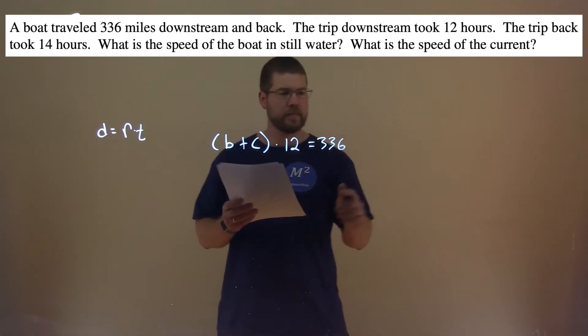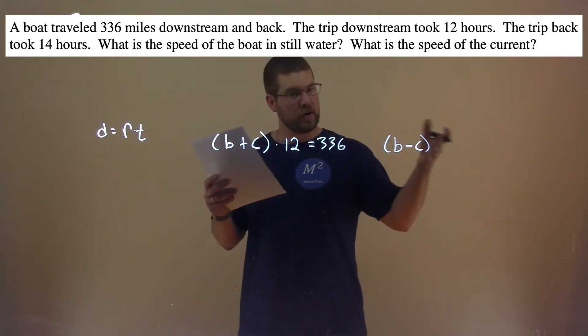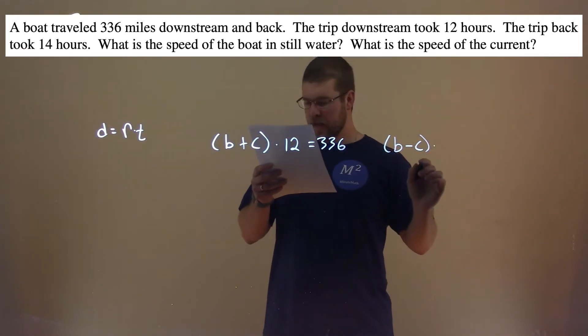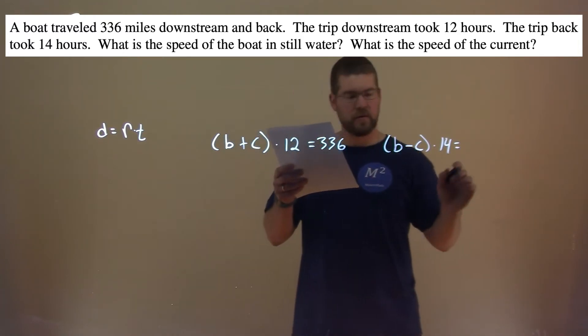The trip back would be the speed of the boat minus the current, because the rate is the boat minus the current—we're going against the current. And that trip took 14 hours and it traveled the same distance of 336.